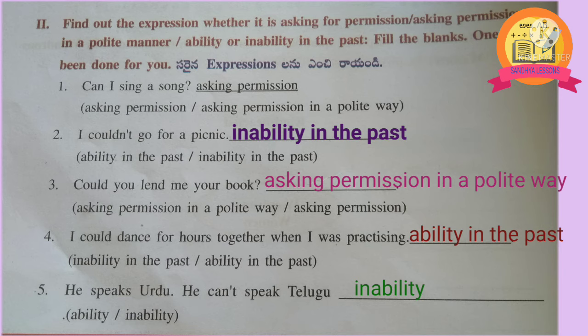2nd one: I couldn't go for a picnic – inability in the past. 3rd one: Could you lend me your book? – asking permission in a polite way. 4th one: I could dance for hours together when I was practicing – ability in the past. 5th one: He speaks Urdu. He can't speak Telugu – inability.